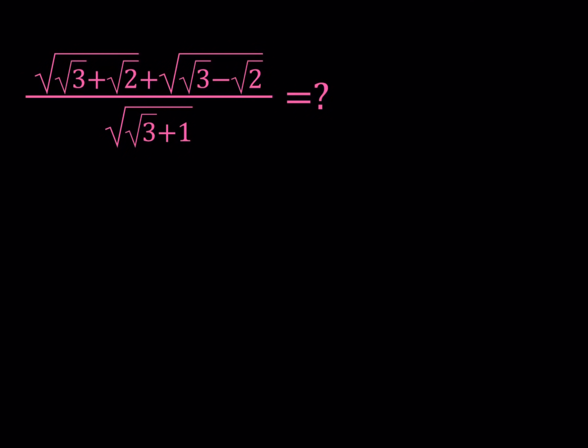Hello everyone. In this video we're going to be simplifying a radical expression. We have the square root of square root of 3 plus square root of 2 plus the square root of square root of 3 minus square root of 2 all over square root of square root of 3 plus 1. We're going to be simplifying this expression. As is, this doesn't look very nice, so we're going to make it nicer by getting rid of some of the square roots here.